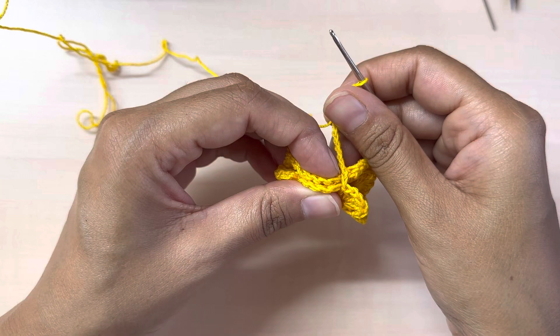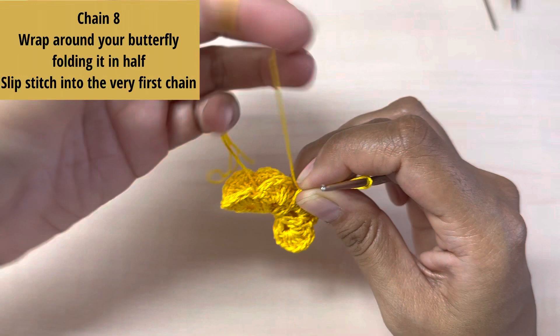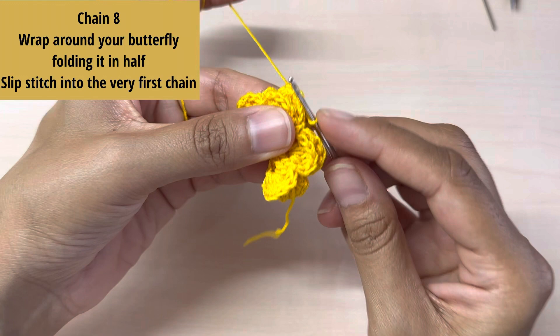Take my chain eight, wrap it around all around this way, and back where I started. And I'm going to slip stitch into the very first chain of the eight chains that I just made. So here I'm going to slip stitch.